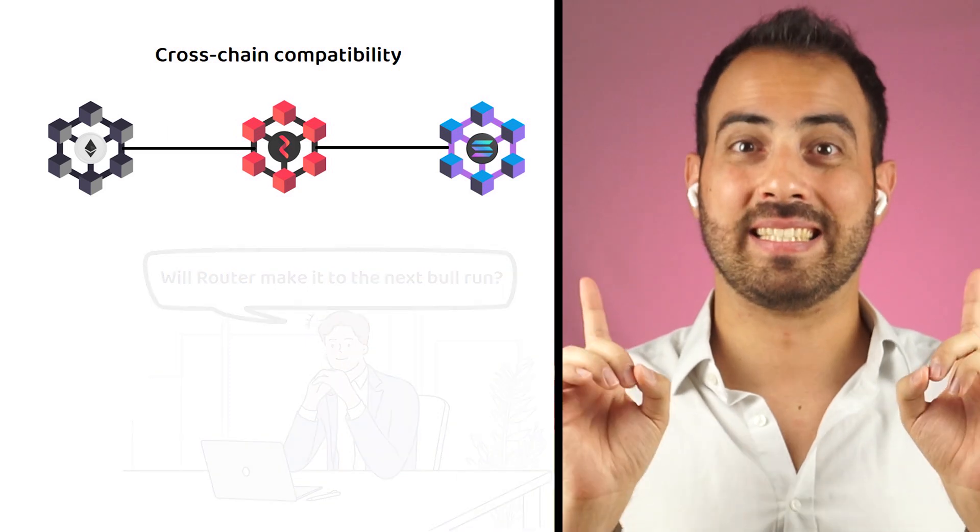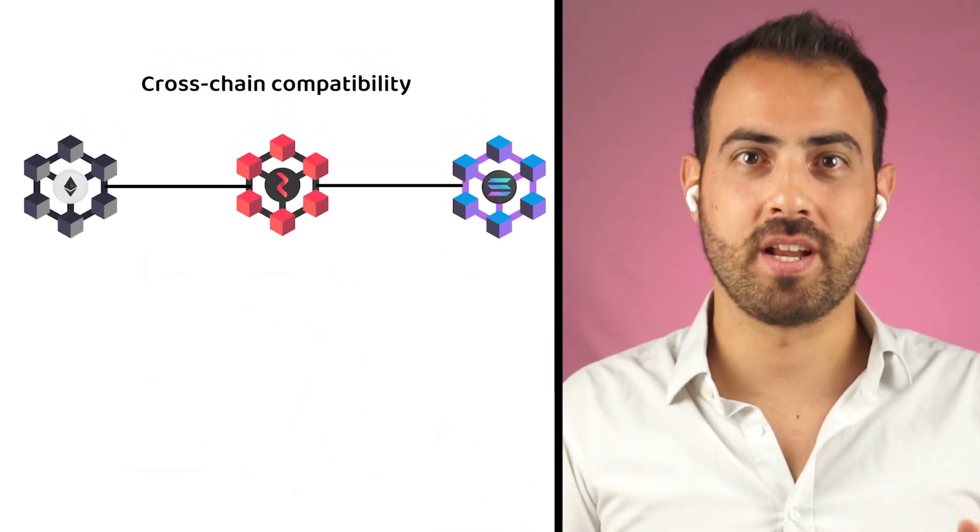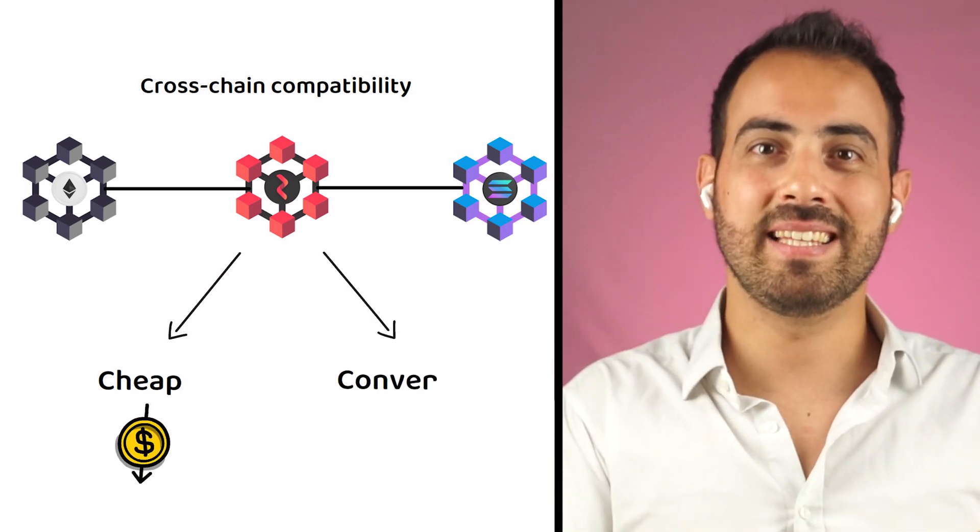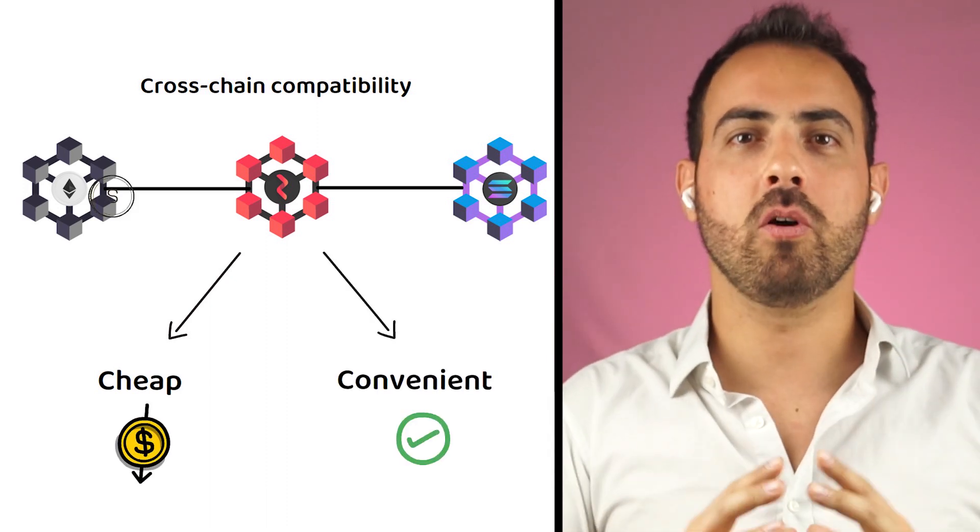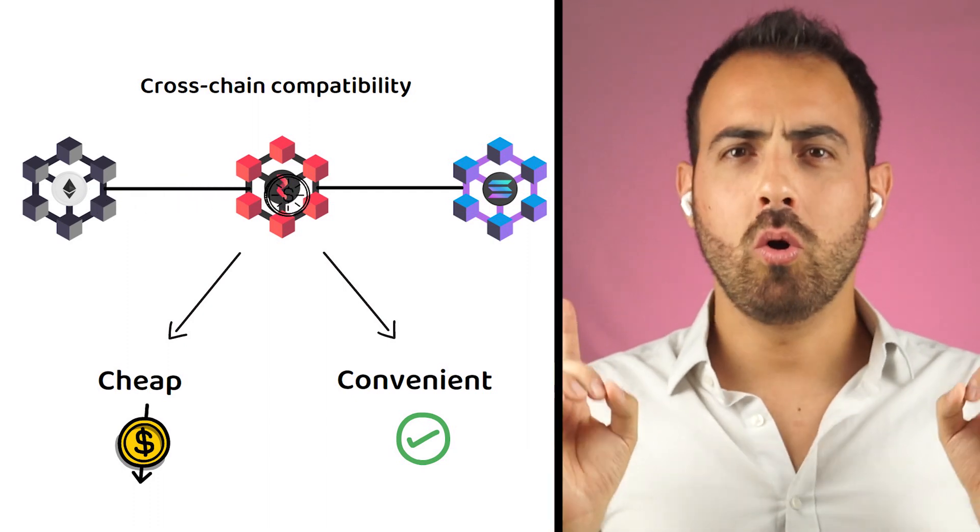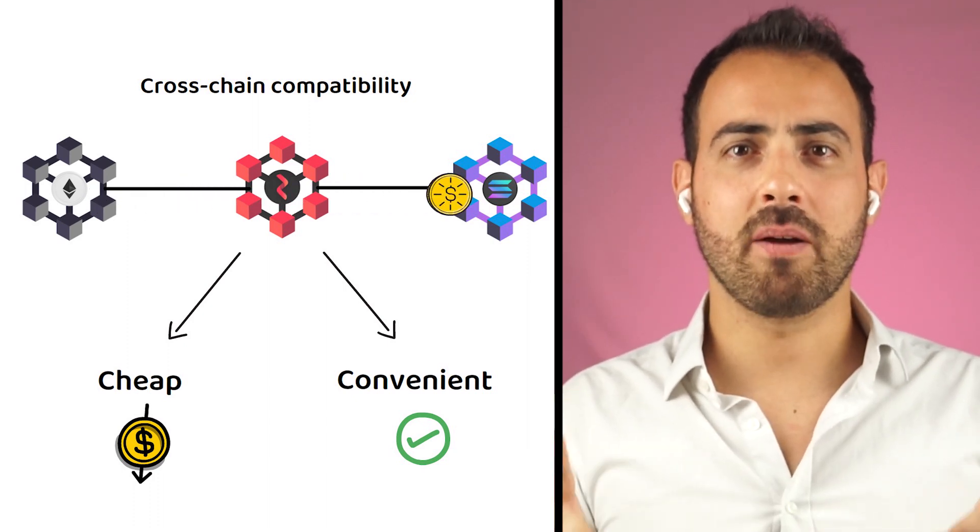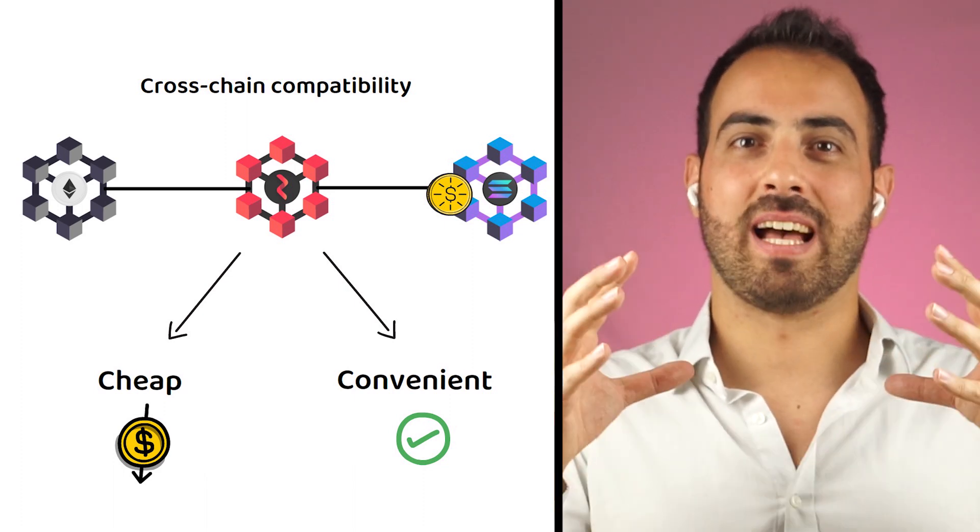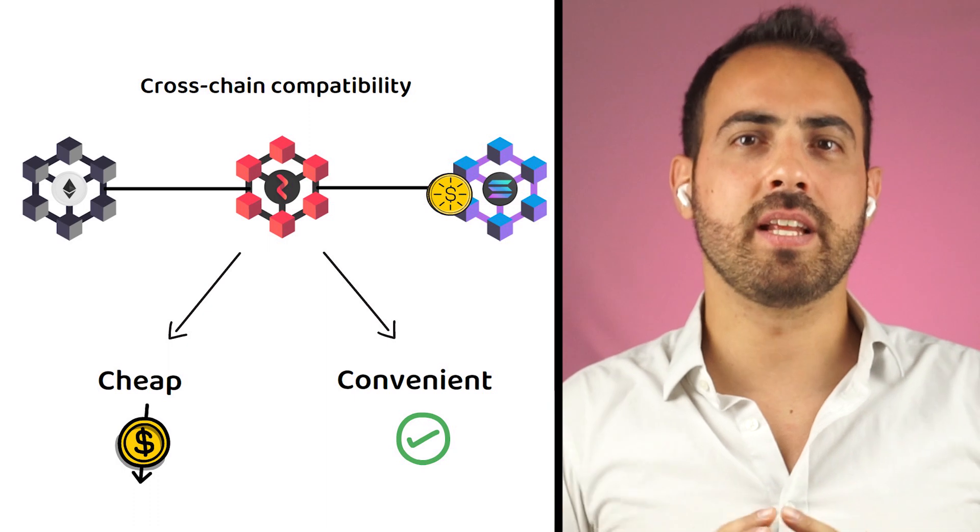Router Protocol has set itself up nicely for the future by providing a cheaper, more convenient way to exchange data and assets across multiple blockchains. Ultimately, this reduces the fragmentation of liquidity, communities, and developers which have been spread across many different networks.